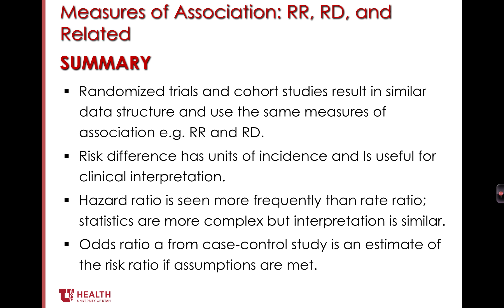In summary: randomized trials and cohort studies result in similar data structure and use the same measures of association, such as risk ratio and risk difference. Risk difference has units of incidence and is useful for clinical interpretation. The hazard ratio is seen more frequently than the rate ratio — the statistics are more complex but the interpretation is similar. The odds ratio from a case control study is an estimate of the risk ratio if the assumptions are met.